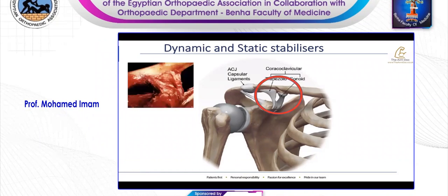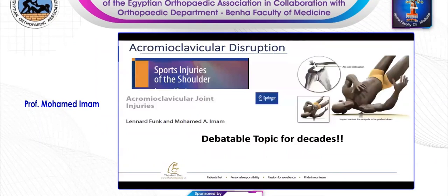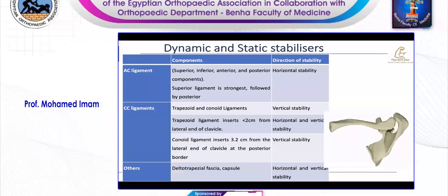We know that the CC ligament is the strongest ligament controlling the acromioclavicular joint — formed of conoid and trapezoid with tensile strength of over 800 Newtons. The anatomic landmarks and isometric point of the CC ligament on the undersurface of the clavicle have been well described. When we wrote this chapter in the important textbook, we found there has been debate over the years on the best way of managing acromioclavicular joint, but not a lot of debate on the dynamic and static stabilizers and biomechanics.